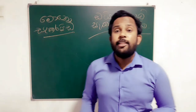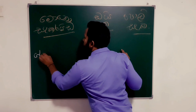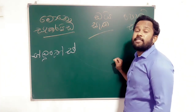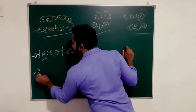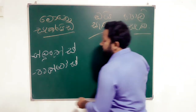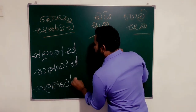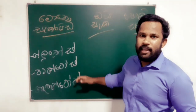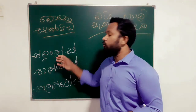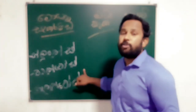The first monosaccharide is glucose. This is called fructose. This is called galactose. So the monosaccharides are: glucose, fructose, and galactose.